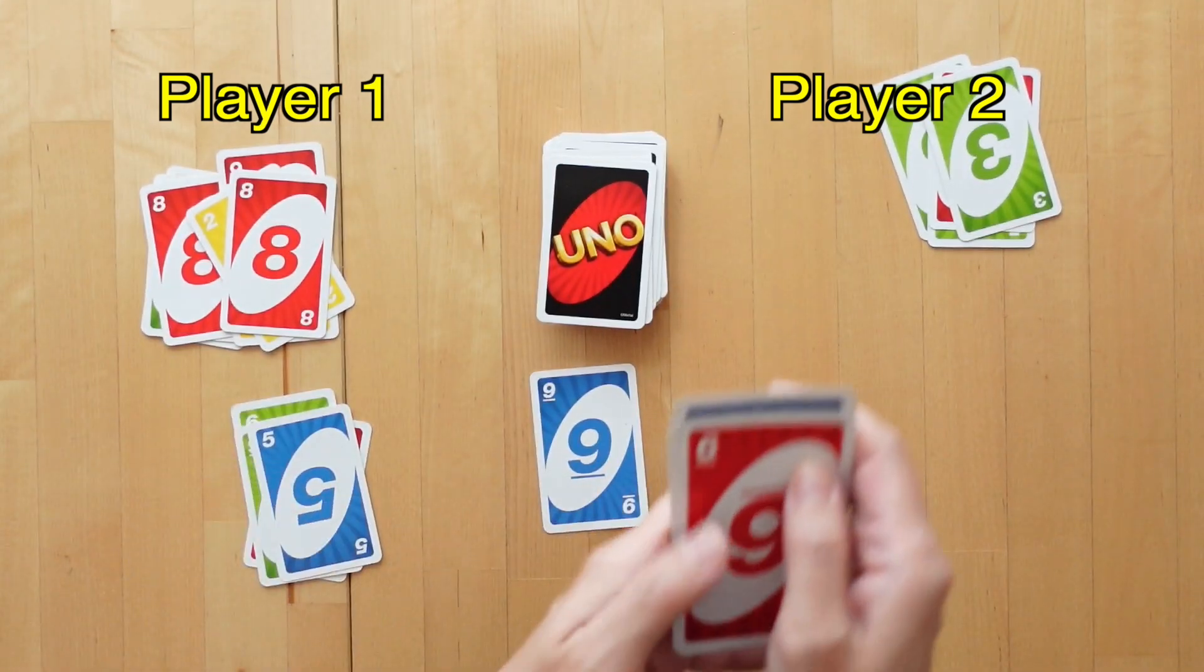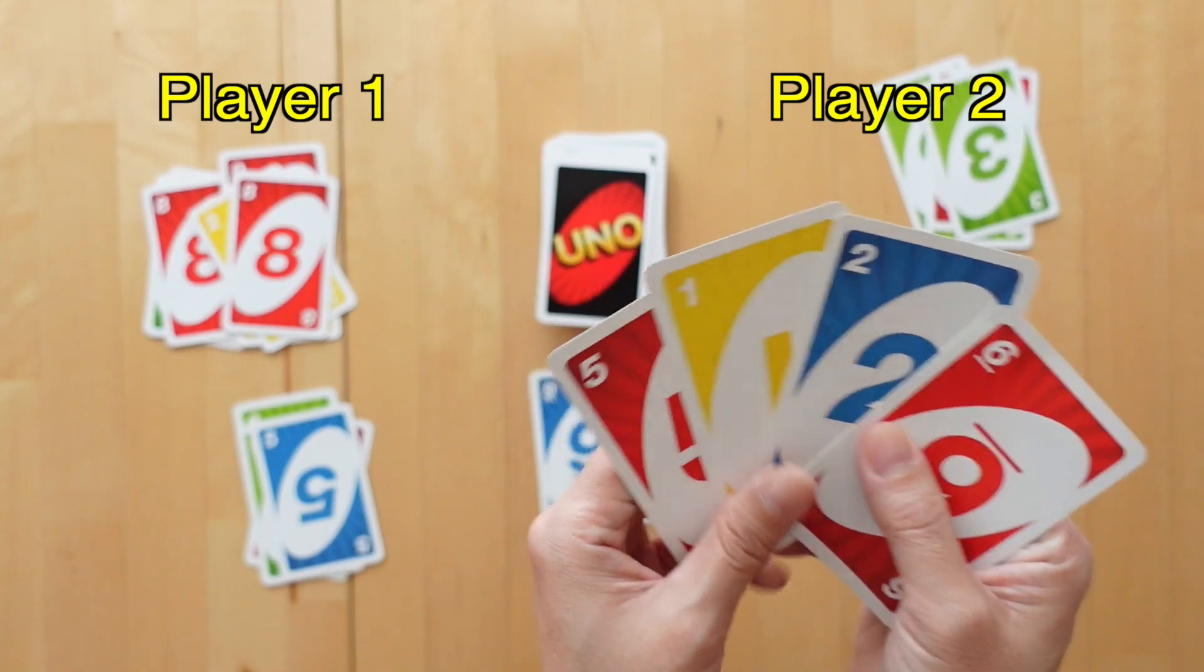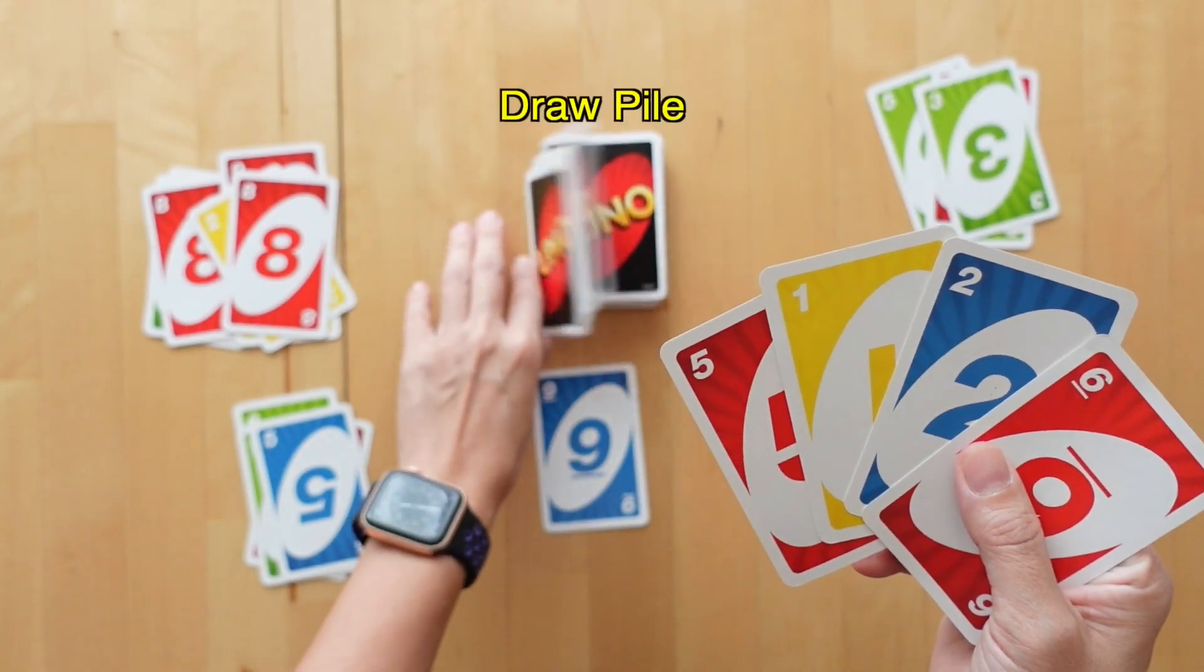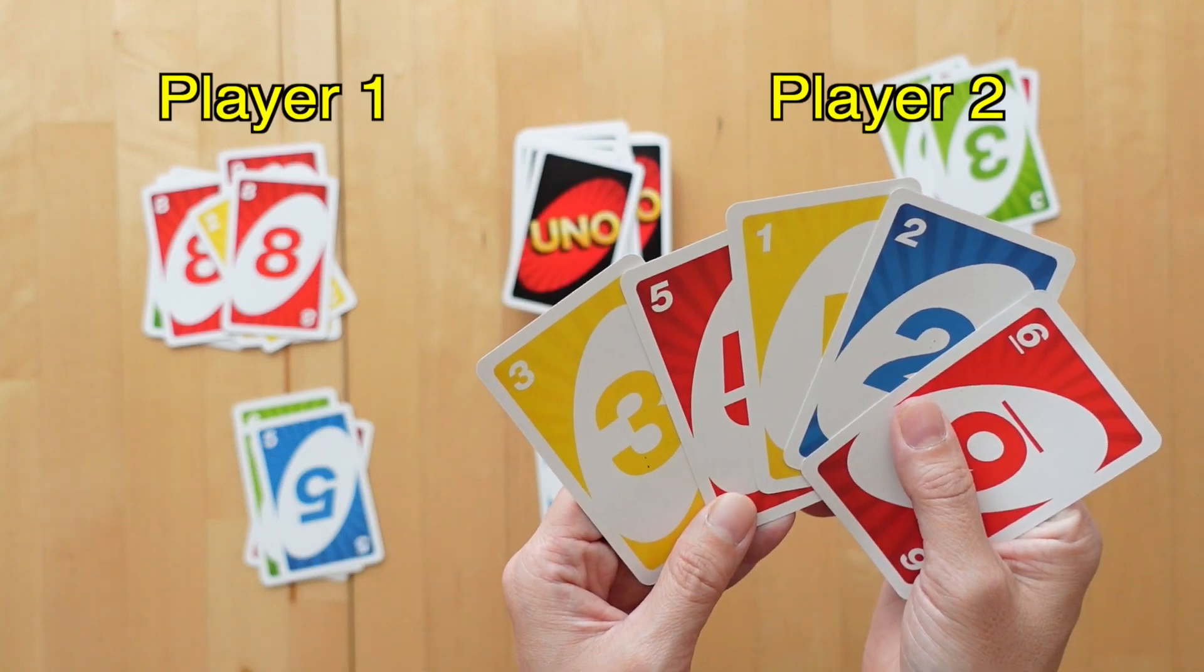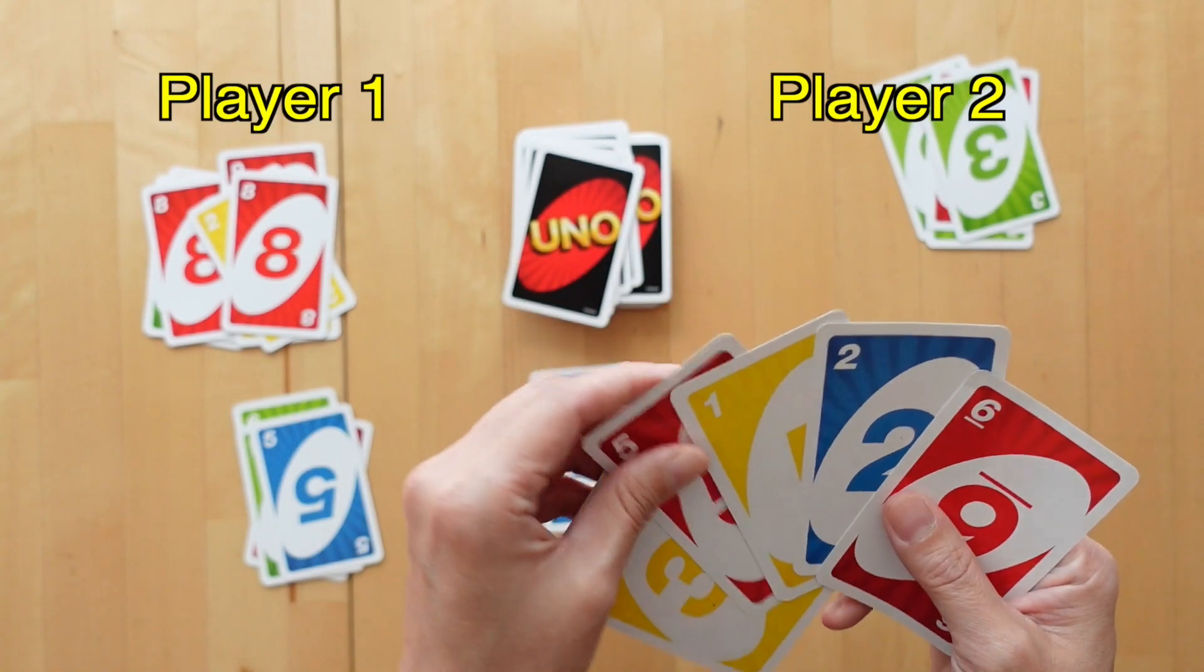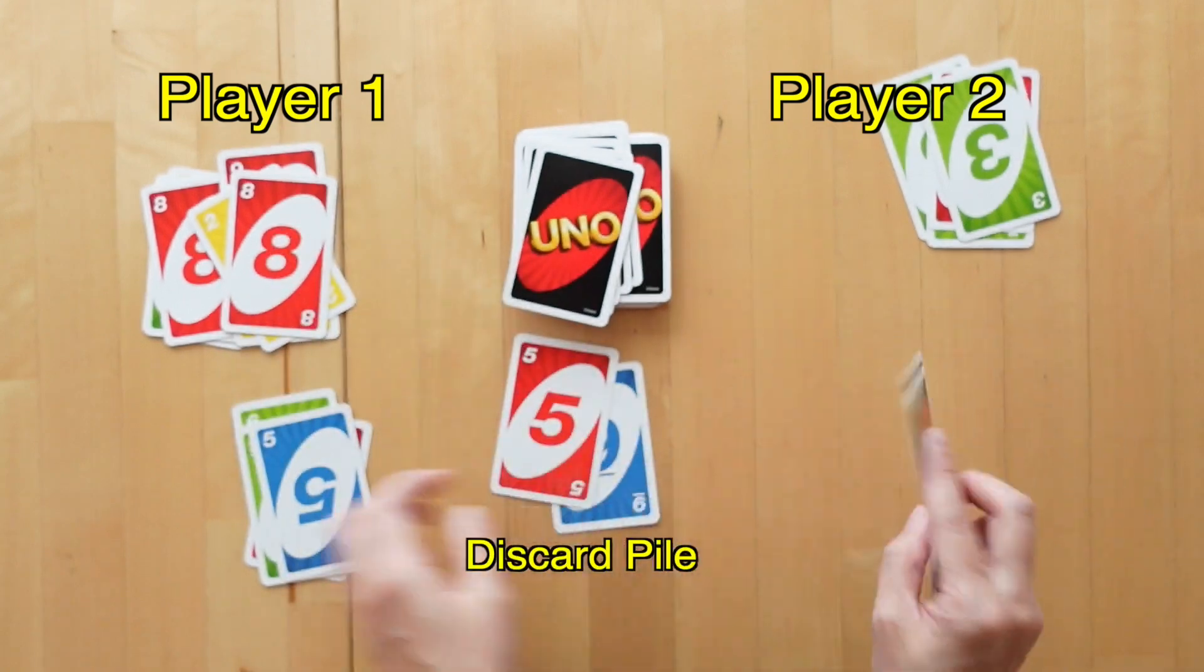It's now player 2's turn. And they will take a card from the draw pile. Can't make a 20 just yet, so discard the 5 and save it for later.